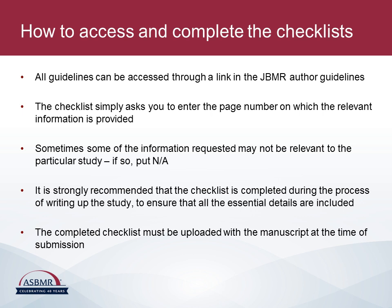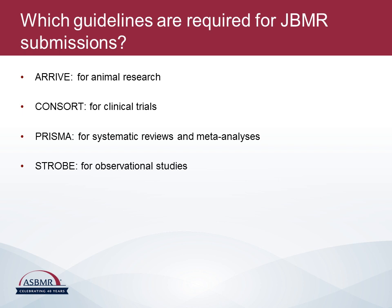If manuscripts are submitted that need checklists but don't include them, they will be returned so that the checklist can be done. We use four sets of guidelines for JBMR submissions: ARRIVE for animal research, CONSORT for clinical trials, PRISMA for systematic reviews and meta-analyses, and STROBE for observational studies.